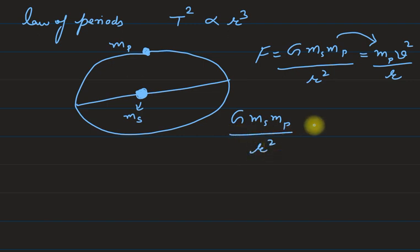mp we can cancel, but first of all we will write v in terms of omega angular velocity. We know that v is equal to r omega, where omega is the angular velocity of the planet. So r will cancel and mp also cancels.